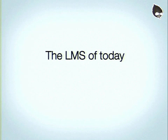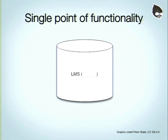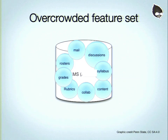We live in the glorious land of the do-it-all LMS. Let's briefly look at the LMS of today — or the '90s — because it's the exact same thing. It's one massive point of success and failure, because it's an overcrowded feature set. If you think of what an LMS does: discussion boards, email routing, rosters, grades, rubrics, collaboration, chat engines, content, syllabus. That's a lot for any system to do. No one's going to like one product that does all that.